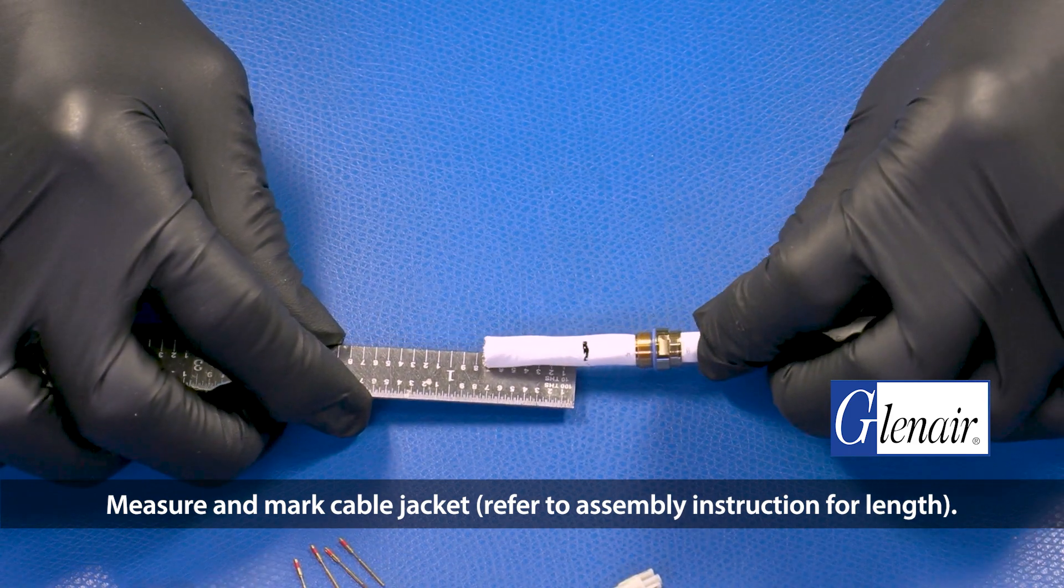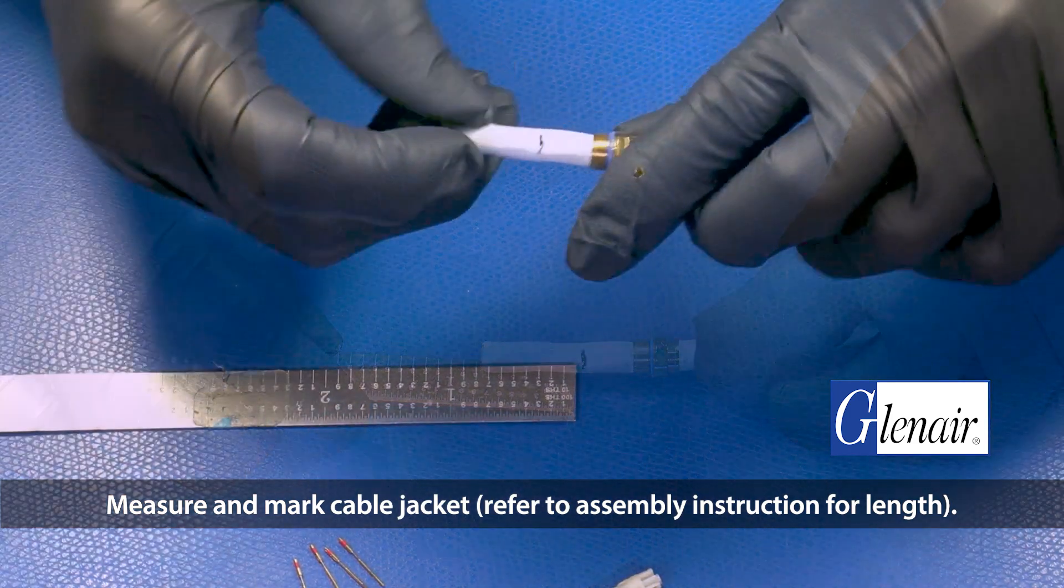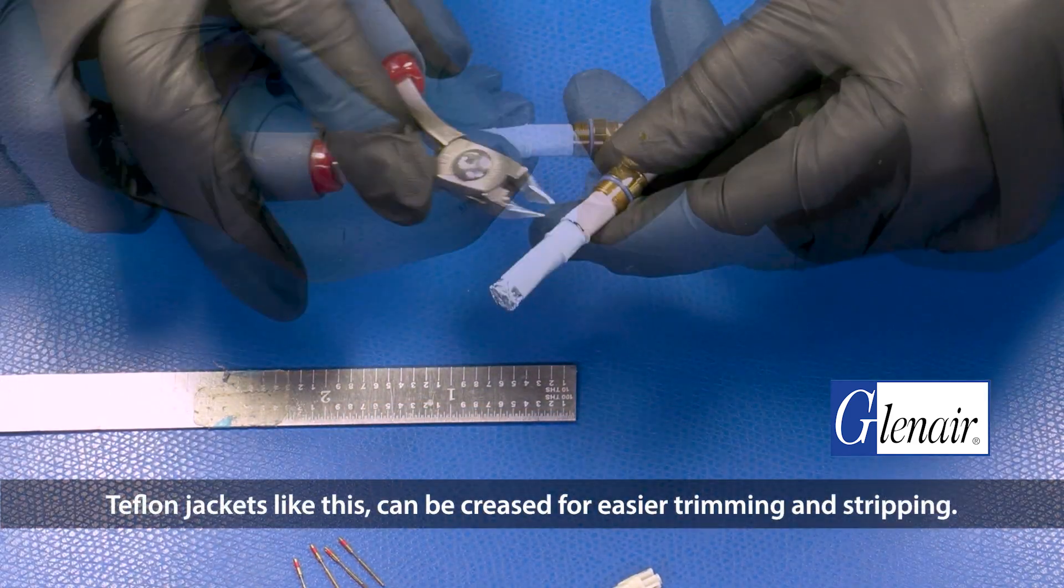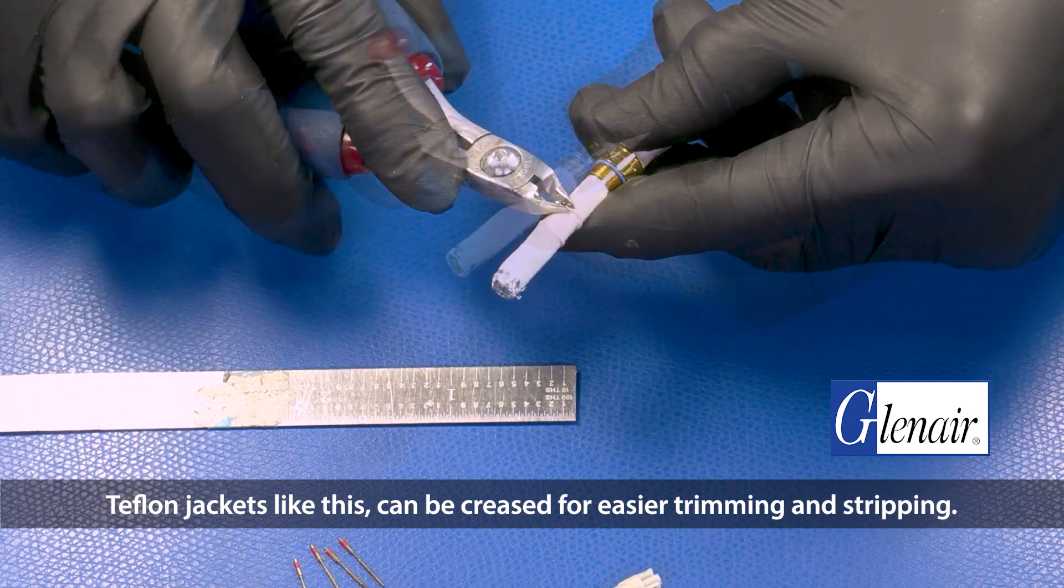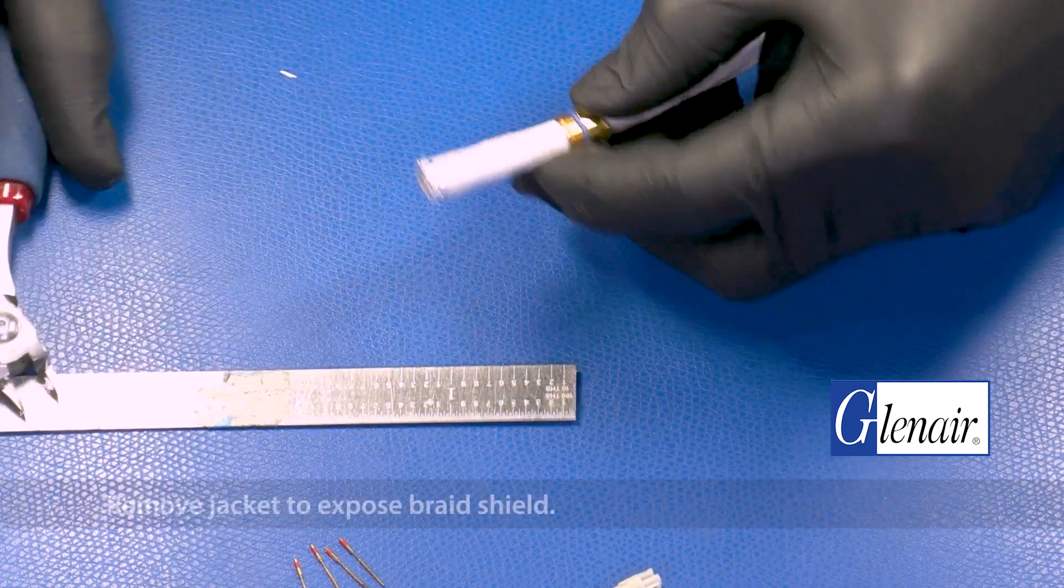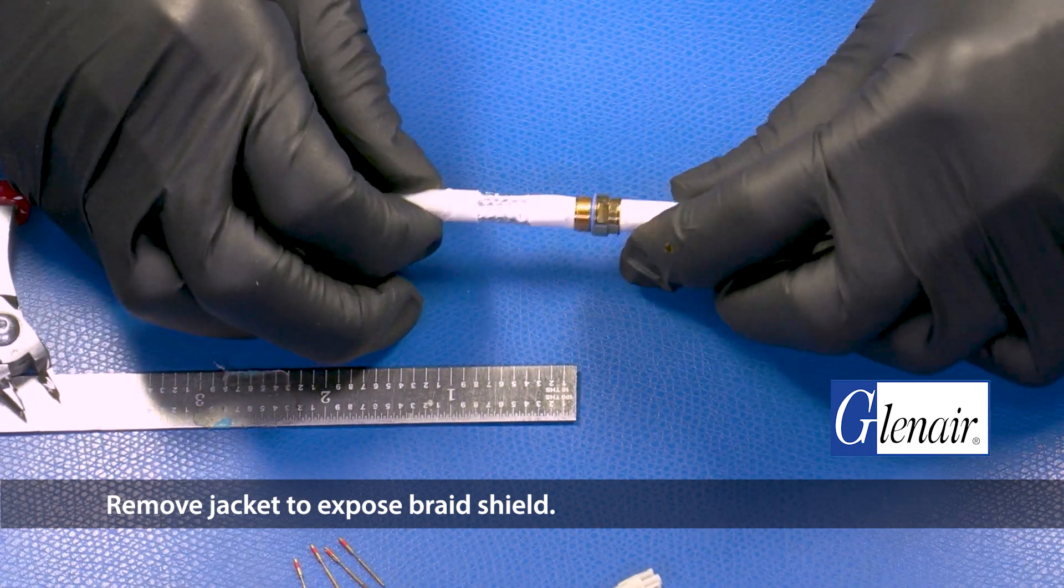Measure and mark cable jacket. Refer to assembly instruction for length. Teflon jackets like this can be creased for easier trimming and stripping. Remove jacket to expose braid shield.